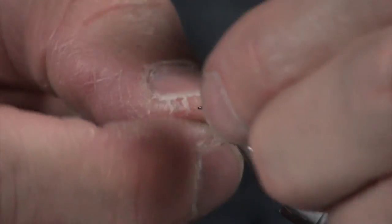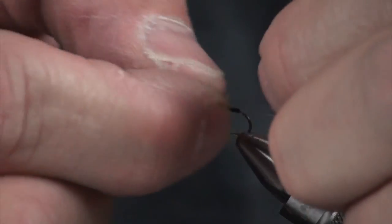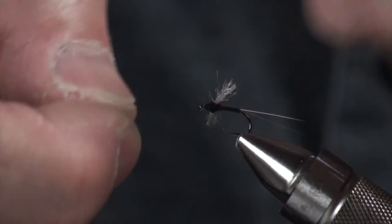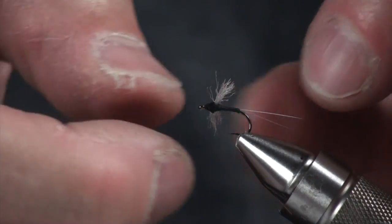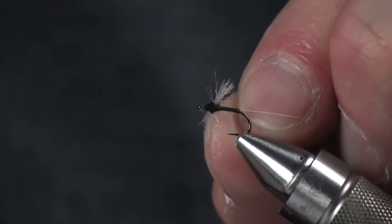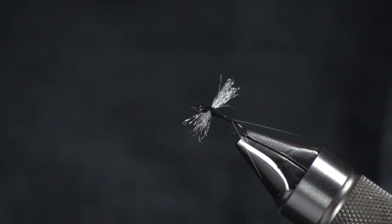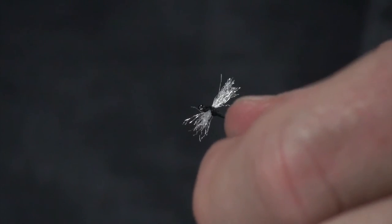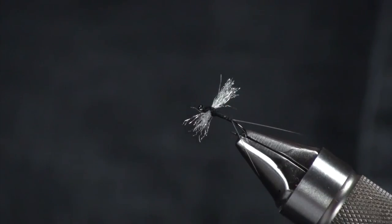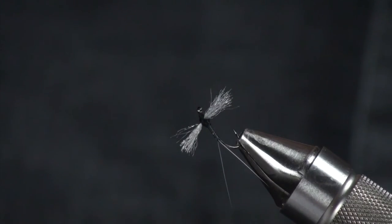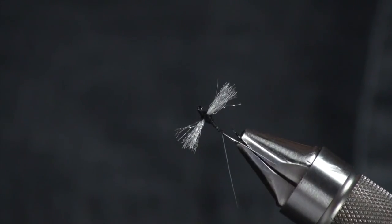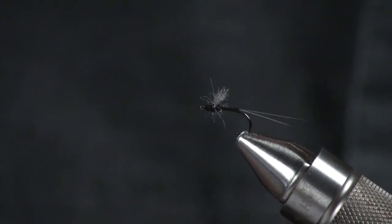Again, they're very dehydrated and elongated in every way. And that is a little Trico spinner, spent wing, a little split tail there. Great little fun hatch to fish to.